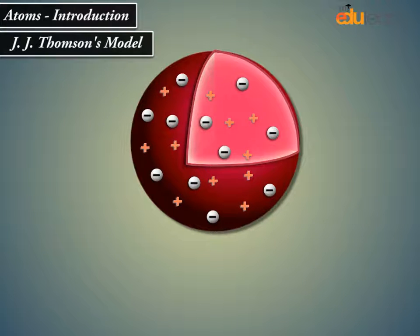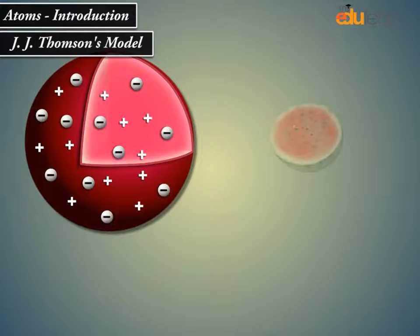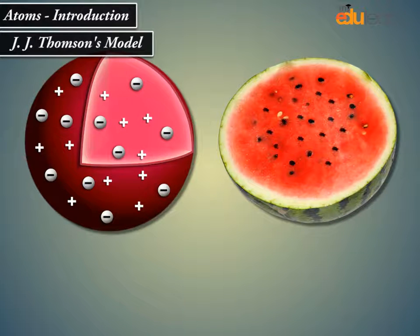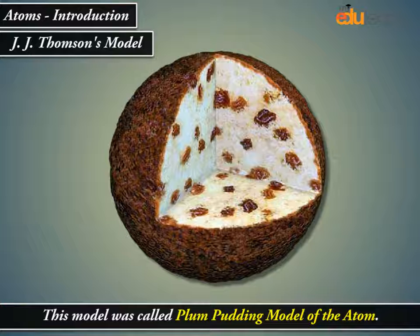the positive charge of the atom is uniformly distributed throughout the volume of the atom and the negatively charged electrons are embedded in it like seeds in a watermelon. This model was called Plum Pudding Model of the Atom.